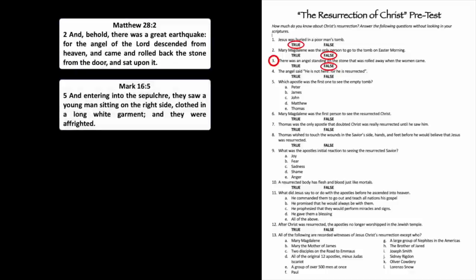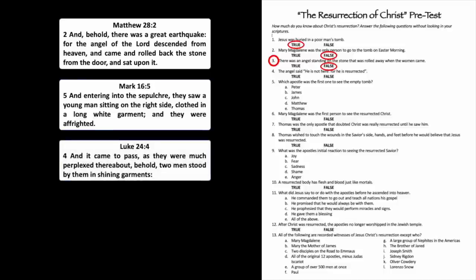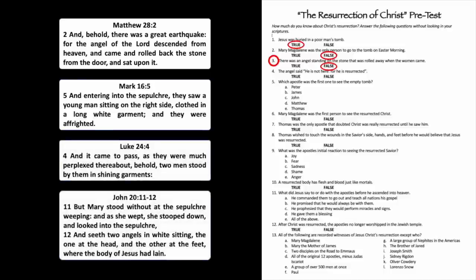Number three: There was an angel standing on the stone that was rolled away when the women came. That is also false. Matthew 28:2 and Mark 16:5 say there was a single angel sitting on the stone — I love that image of the angel just casually resting there, almost as if to say, 'What did you expect? Jesus told you this was going to happen.' Luke and John record two angels, with Luke saying they were standing, but any version makes the statement false.